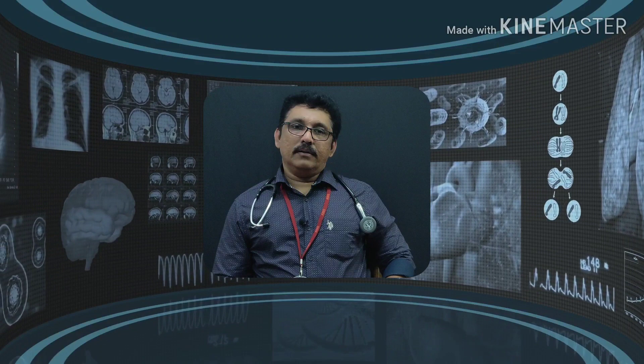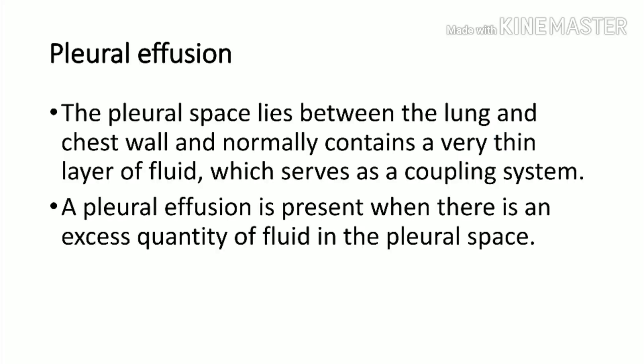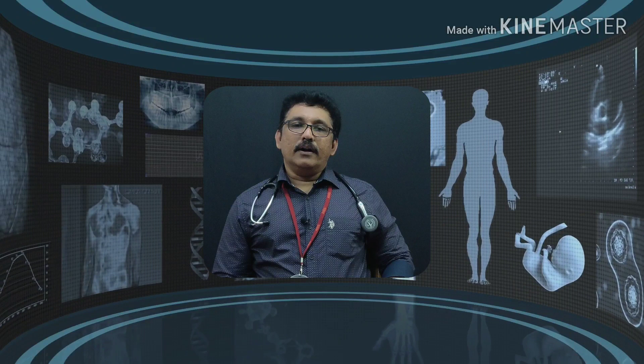Welcome to AETCM, the Emergency Medicine Channel. Today we will discuss pleural effusion. The pleura is the covering which covers the lung, with two layers: parietal and visceral. Normally there is around 15 to 30 ml of fluid in the pleural cavity to prevent friction. When conditions increase this fluid beyond normal, it is called pleural effusion.